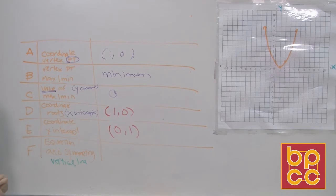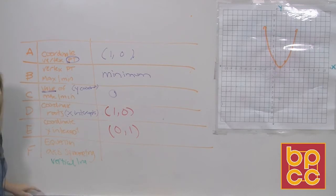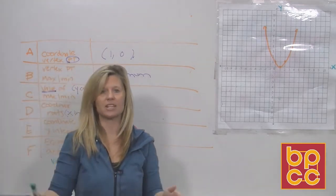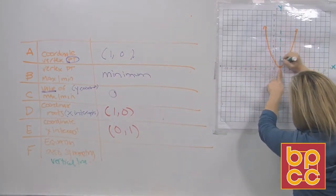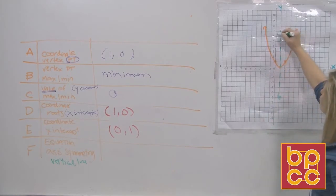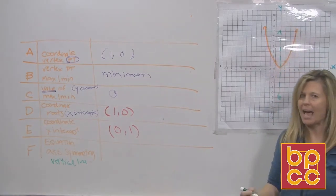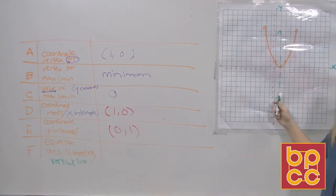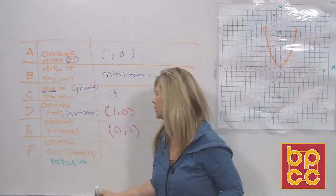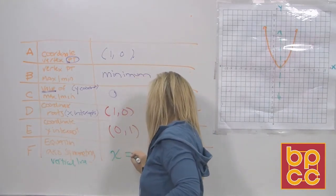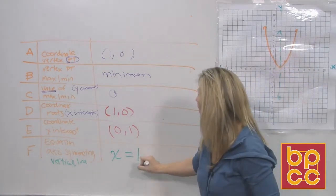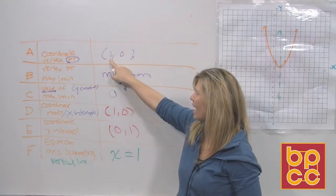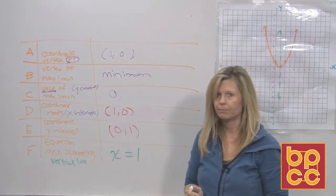The last thing is the axis of symmetry — a vertical line you draw in to cut the parabola in half so it looks the same on both sides. It always goes through the vertex point. To write the equation of a vertical line, we write x equals, and this vertical line's x value is 1 — that number always matches the x value of the vertex point. So x equals 1.